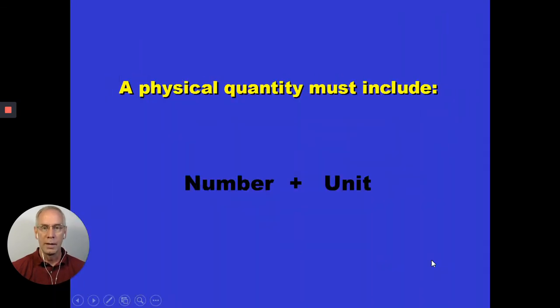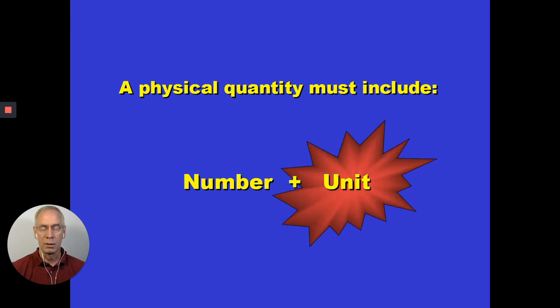In science we make measurements. Measurements have both a number and a unit. So we might say, how tall are you? You wouldn't say six because you don't know if that's six feet tall, six meters tall, six miles tall. So you have to include a unit with that as well.